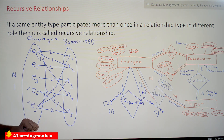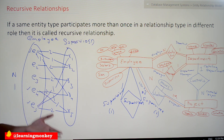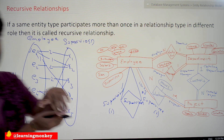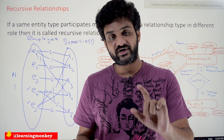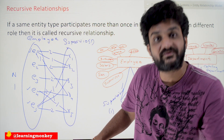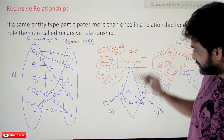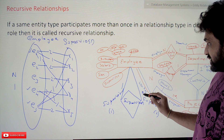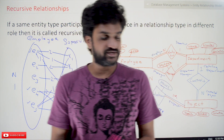What about participation? Are all employees supervisors? No — that's partial participation. Are all employees supervisees? No — some are bosses. So both roles have partial participation, meaning not all employees are supervisors and not all employees are supervisees. Double lines would mean full participation, but here we use single lines for partial participation. So the cardinality ratio is 1 to N and both roles have partial participation. This is all about recursive relationships.